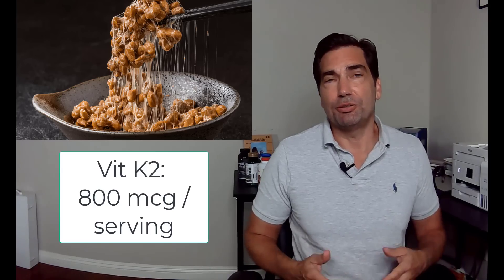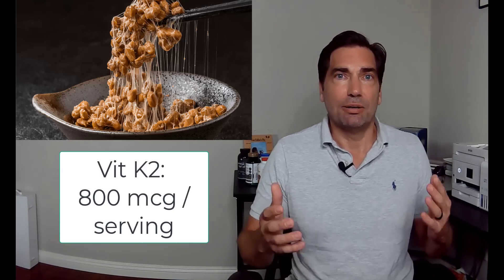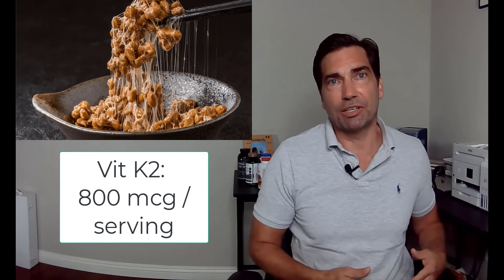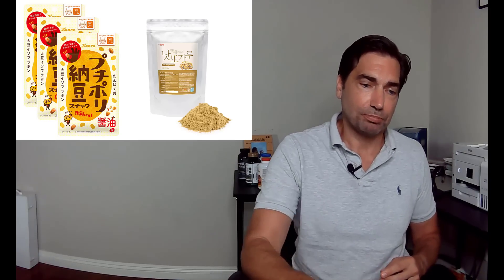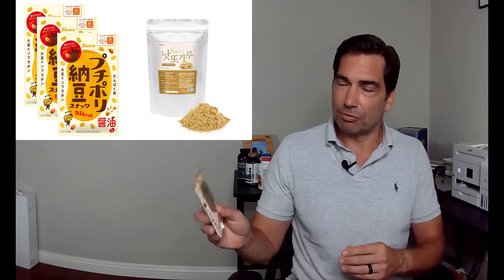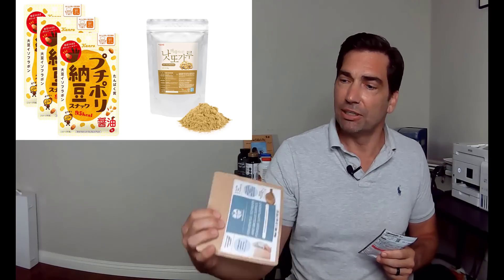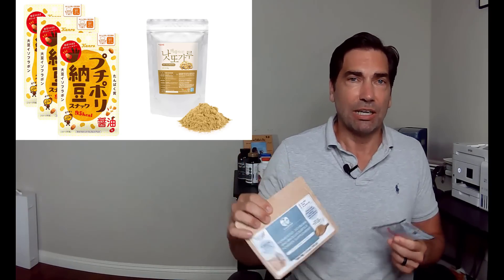I've got a picture of it here. I've never seen it in this form, but apparently this is a popular dish in Japan and it is super high in vitamin K2. You get about 800 micrograms of vitamin K2 from a serving of natto. I've never seen it in this dinner form over the rice, but I was able to find a couple places online where I got it in dried form.